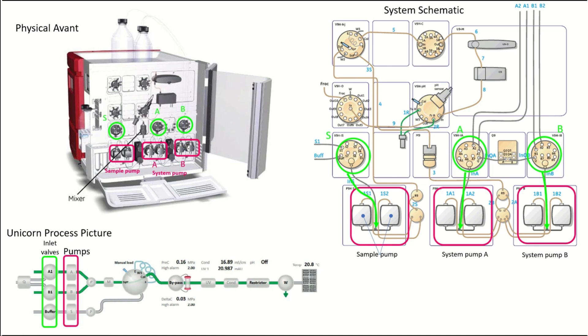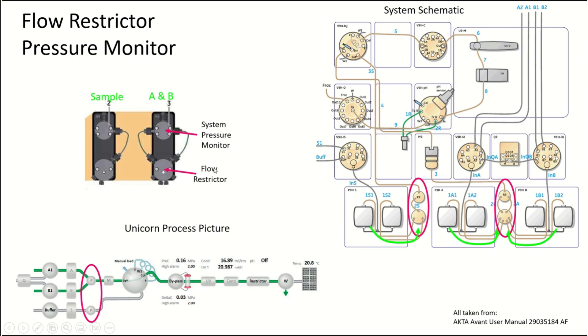After that, each system has an inlet valve: inlet S, A, and B, which corresponds to the sample pump, system pump A, and system pump B. Each pump consists of two stainless steel housings with a piston inside that goes back and forth with check valves on the top and bottom. The flow restrictor keeps solutions from flowing back when the system is idle, and then a pressure monitor on top is responsible for the system's pressure number given in the systems control module.